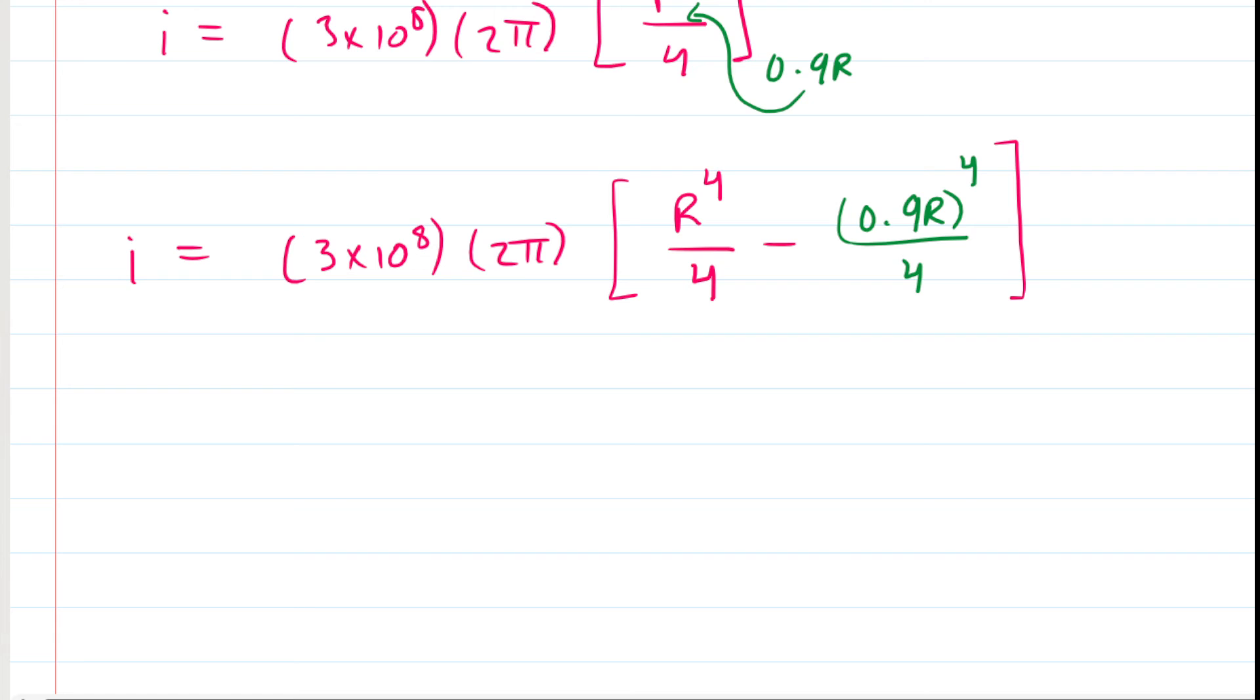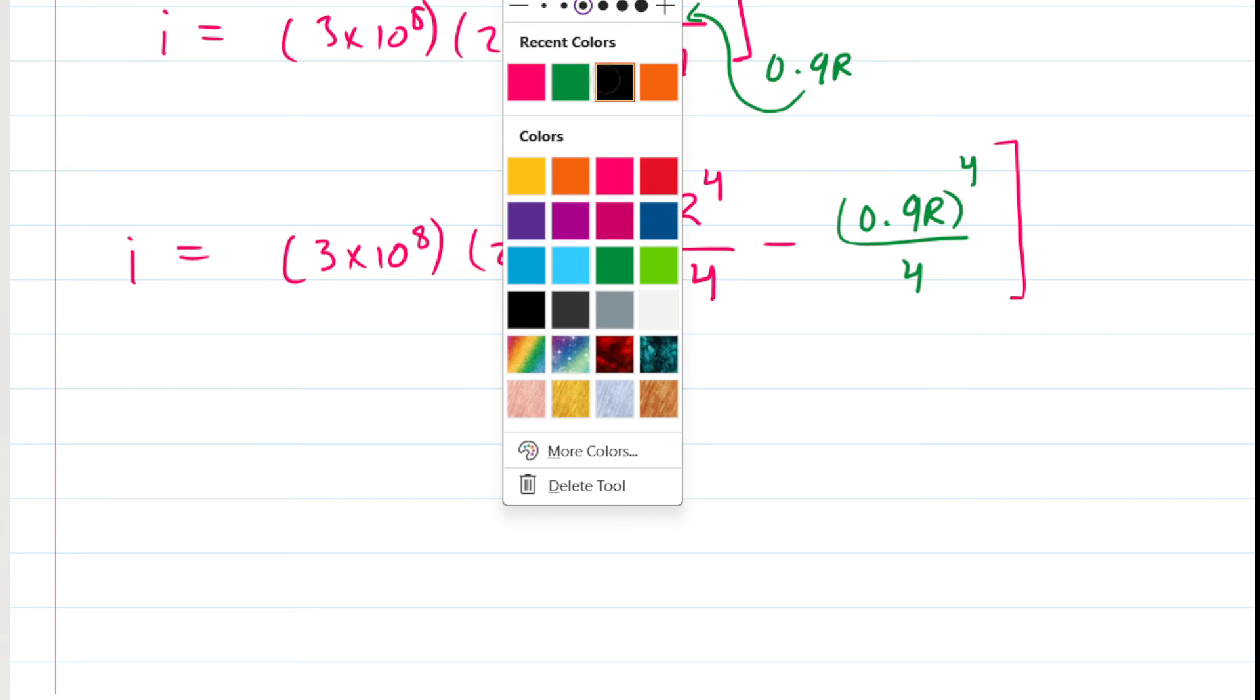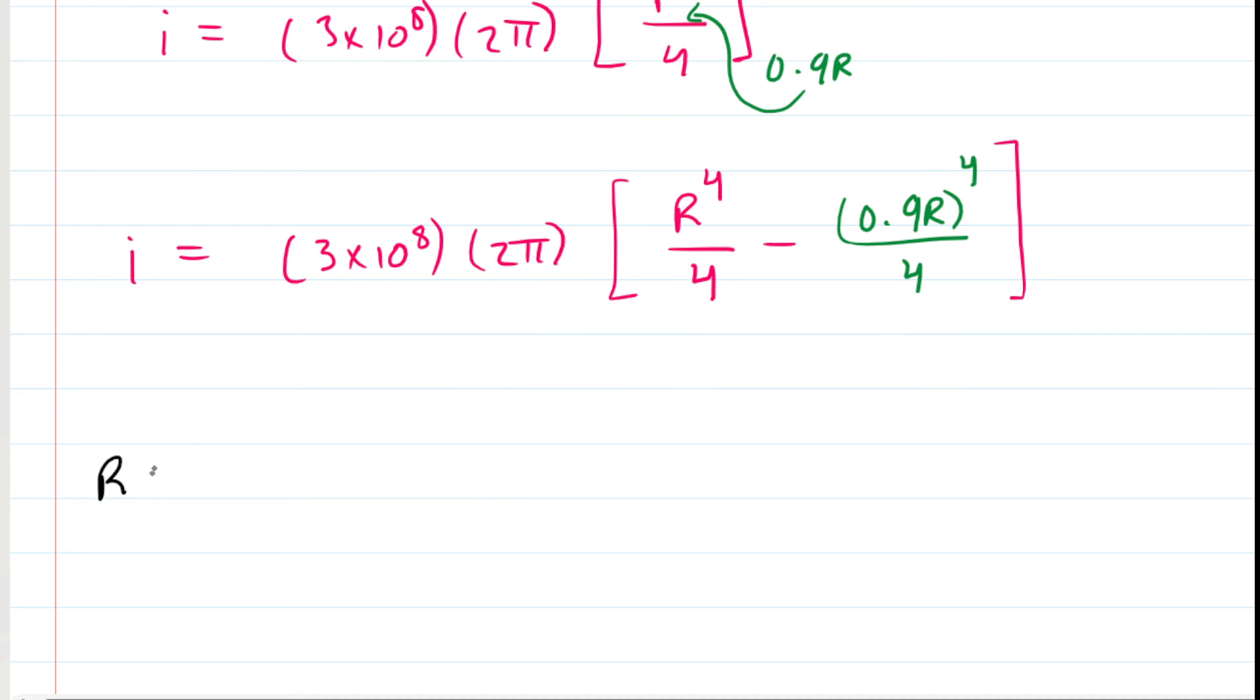And, we were given the value of R in the problem. R was 2 millimeters, which is going to be 0.002 meters. So, that's going to be plugged in for R. For the 0.9R, we would take the 0.002 meters and then multiply that by 0.9. So, that's going to be 0.0018 meters. So, we'll plug those values in for R and the 0.9R.